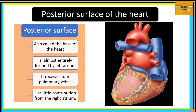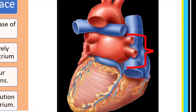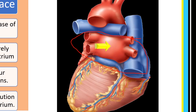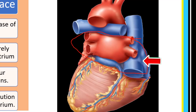The posterior surface is also called the base of the heart. The heart does not sit on the base — the heart actually sits on the diaphragmatic surface. The base is almost entirely formed by the left atrium, with a little contribution from the right atrium.